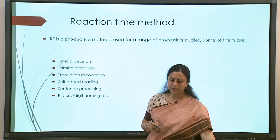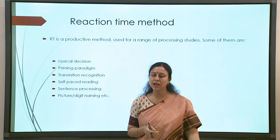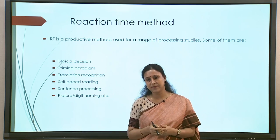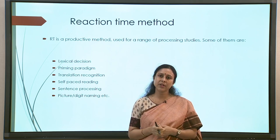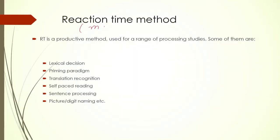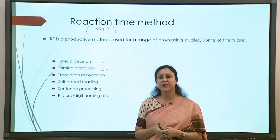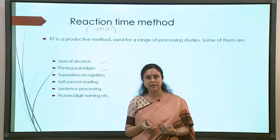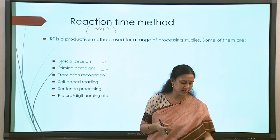There are various kinds of designs used with reaction time as the output. You can make participants take part in different kinds of tasks, all of which ultimately give us a time in milliseconds. Reaction time is always measured in milliseconds. There are different kinds of designs: lexical decision, priming paradigm, translation recognition, self-paced reading, and so on. All of these experimental designs are being discussed beforehand because as we discuss processing literature, we will be talking primarily about experimental evidence.